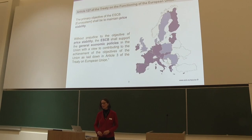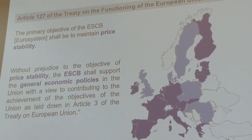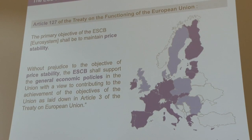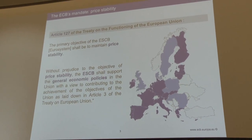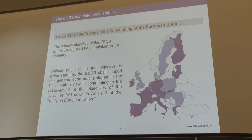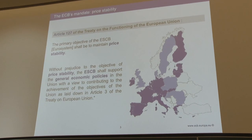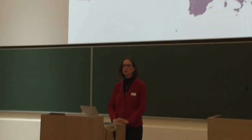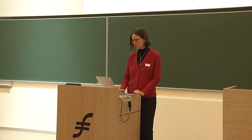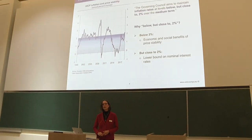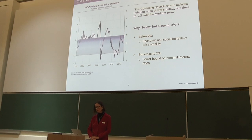Starting with the ECB's mandate and strategy, this is laid down in Article 127 of the Treaty on the Functioning of the European Union. It is clearly spelled out that the primary objective of the euro system shall be to maintain price stability. A second part of this article states that without prejudice to price stability, the ECB shall support the general economic policies in the union, which provide a general framework for monetary policy to operate within.